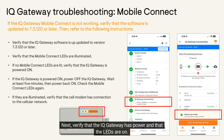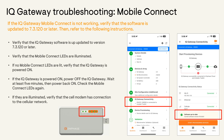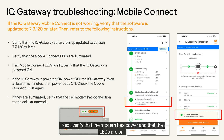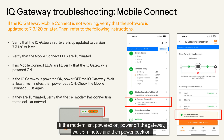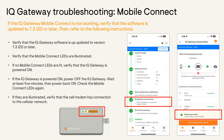Next, verify that the IQ Gateway has power and that the LEDs are on. Then verify that the modem has power and that the LEDs are on. If the modem isn't powered on, power off the gateway, wait five minutes, and then power back on. Check the mobile connect's LEDs again.